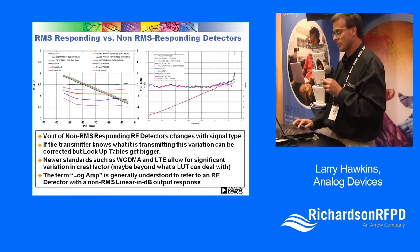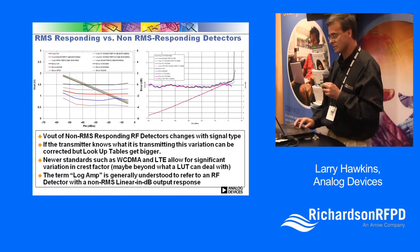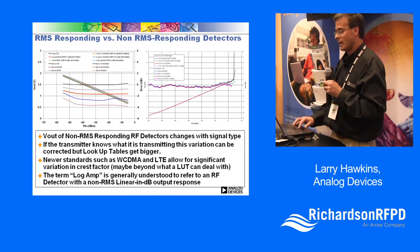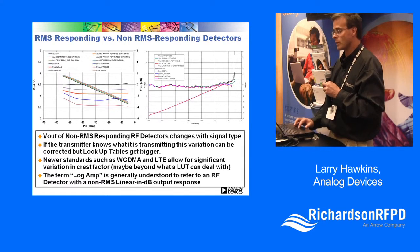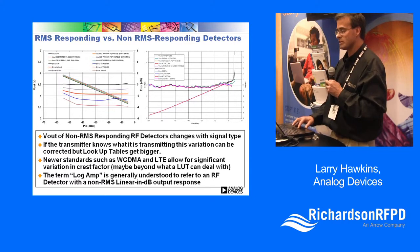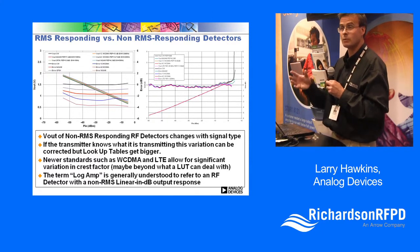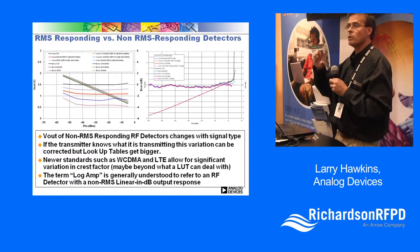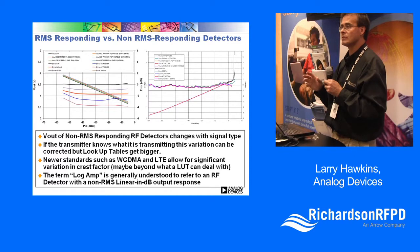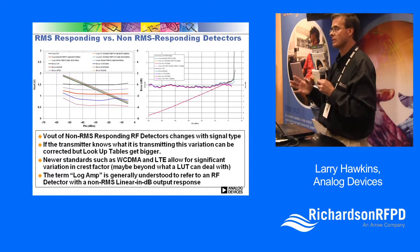This graph shows a log detector being driven with various modulation waveforms from CW all the way to 4-carrier wideband CDMA. Even though the average power is the same, the output from the power detector changes — and it's even worse for a diode detector. In an RMS detector, however, the output will not change when your peak-to-average value changes. That is the key advantage behind RMS power detectors.